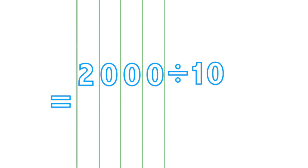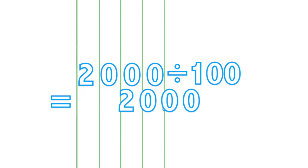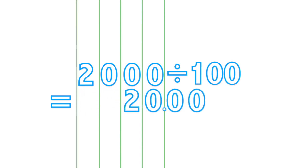Now, if you divide by 10, then you shift all the digits to the right one number place. If you divide by 100, you shift all the digits to the right two number places, and so on.